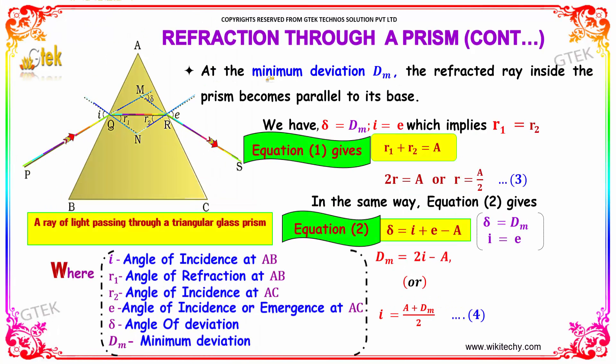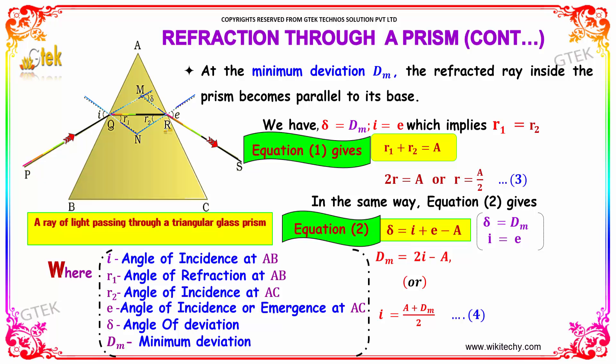At the minimum deviation dm, the refracted ray inside the prism becomes parallel to its base. We have delta equals dm, i equals e, which implies r1 equals r2. So r1 plus r2 equals A, which indicates that 2r equals A and r equals A by 2.